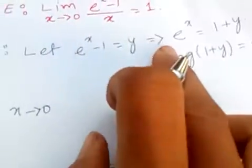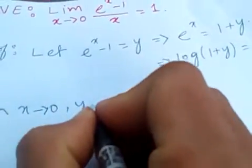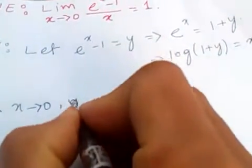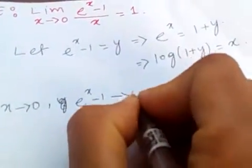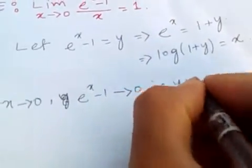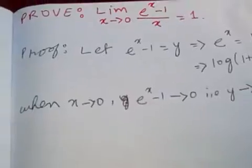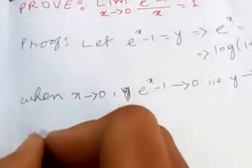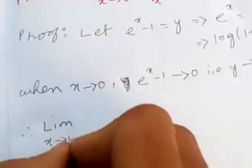When x tends to 0, here x tends to 0, then e^x - 1 tends to 0, then y tends to 0. Therefore, limit of x tends to 0.